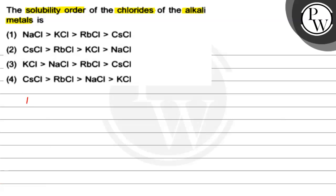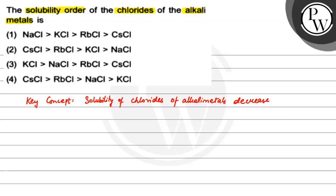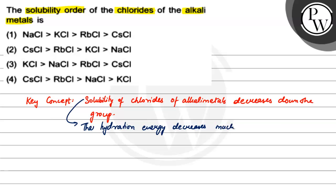Now we will solve this. What concept do we use? The solubility of chlorides of alkali metals decreases down the group. Why is that? Because the hydration energy of ions decreases much more rapidly than the lattice energy, and that is why the solubility decreases down the group.